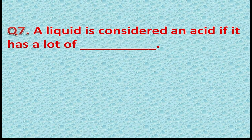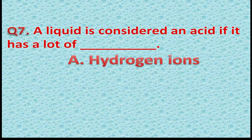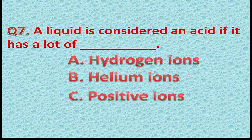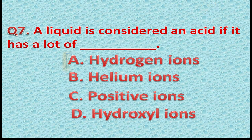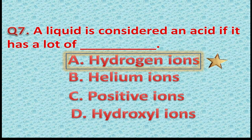Question 7: A liquid is considered an acid if it has a lot of — fill in the blank. Option A: Hydrogen ions. Option B: Helium ions. Option C: Positive ions. Option D: Hydroxyl ions. The correct answer is A — Hydrogen ions. You got one more star if you chose this option.